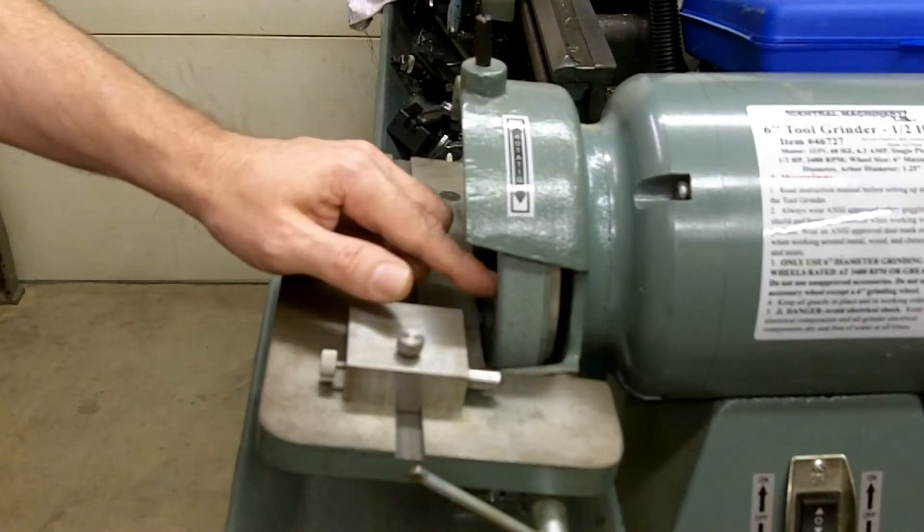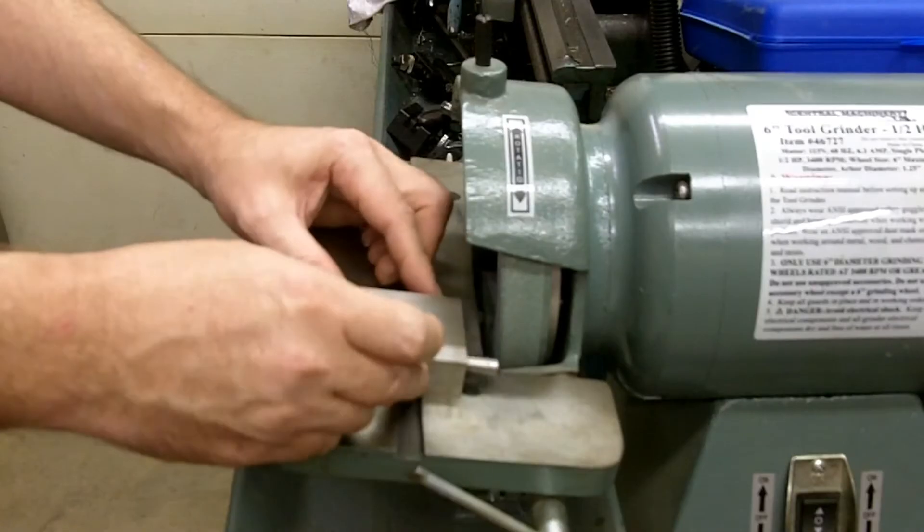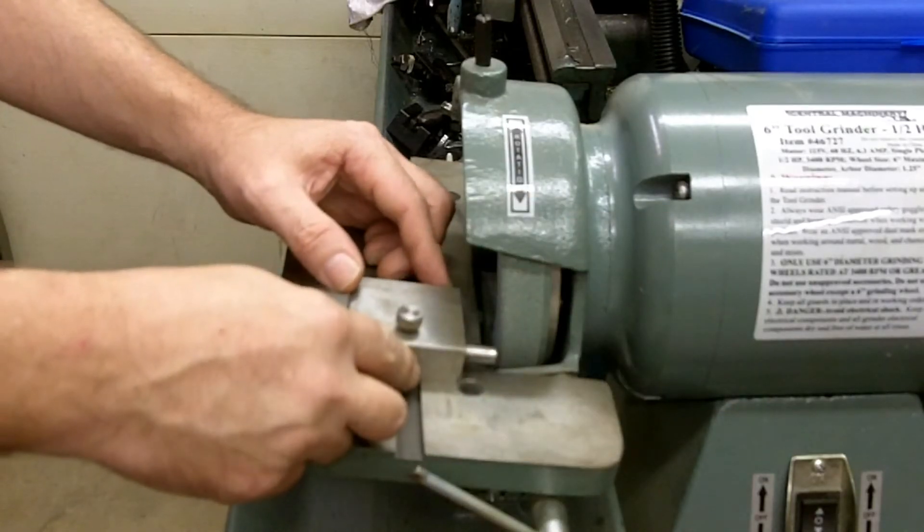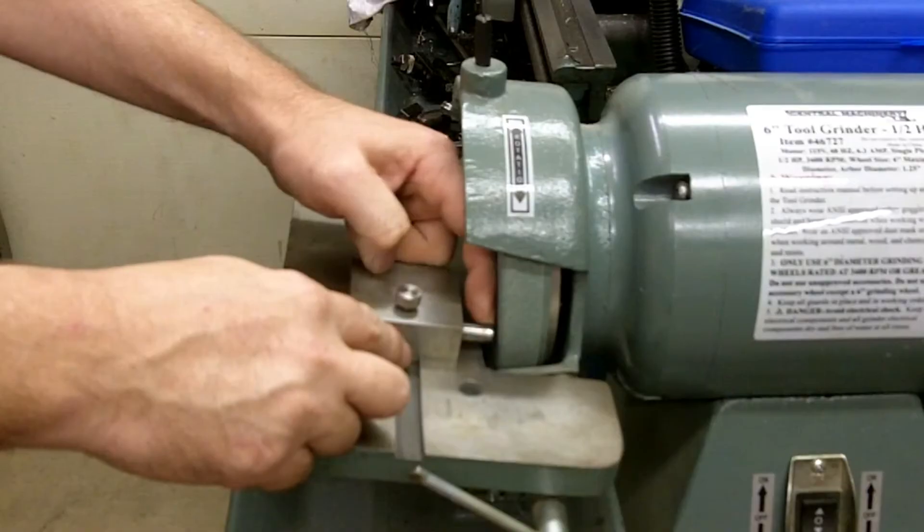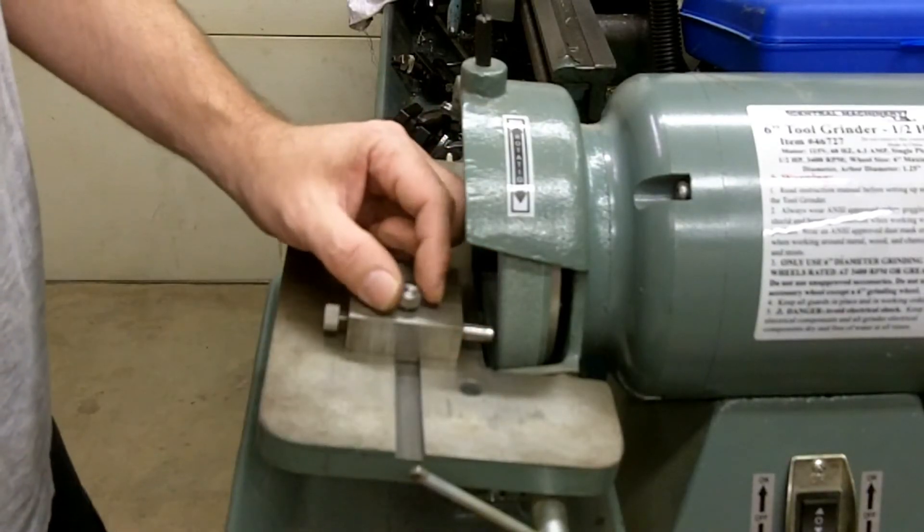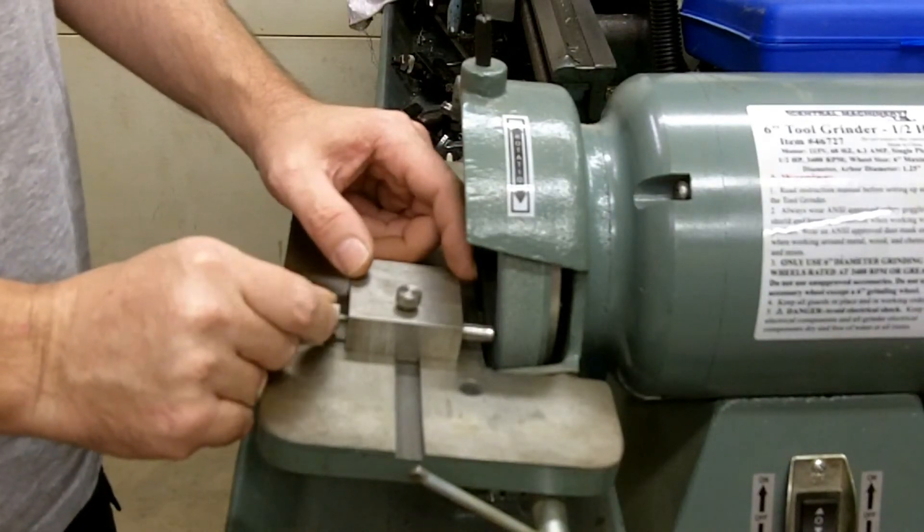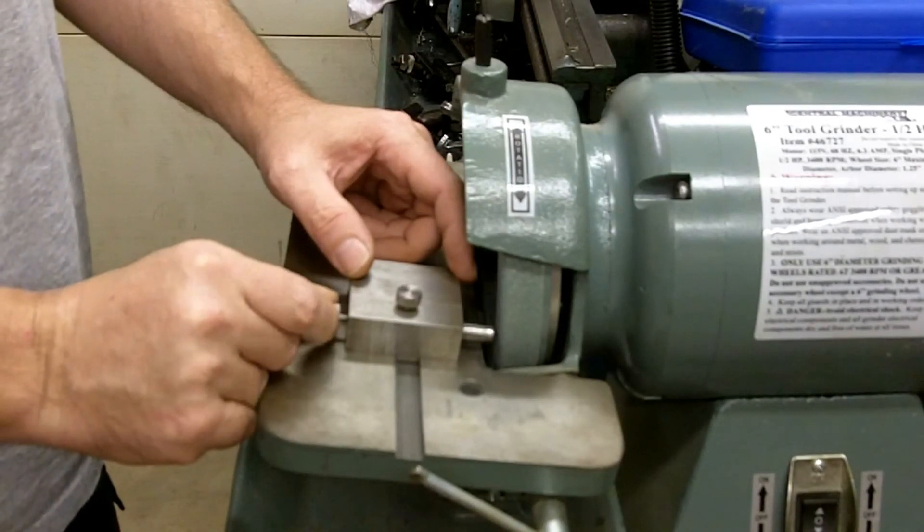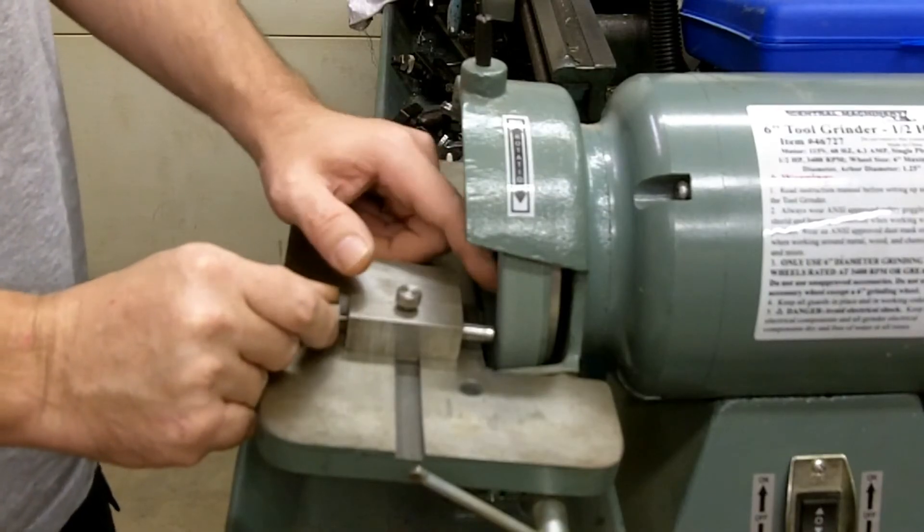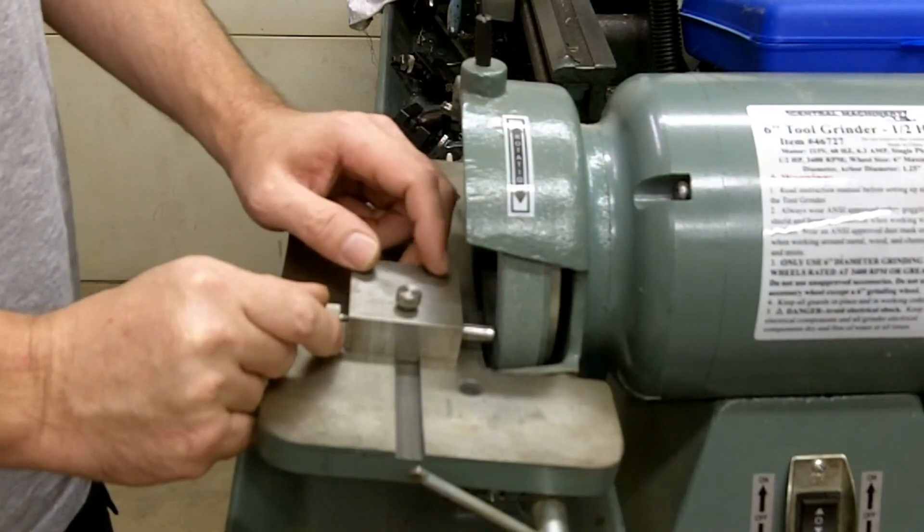So basically what you're going to want to do with this to dress this wheel flat is turn on your grinder, of course, and make sure you have some clearance. Bring the tool—I'm just going to do a light drag on this thumb wheel—and you're going to slowly push that cutter out until you make contact with the wheel.